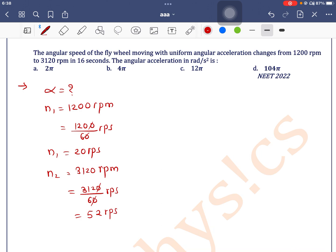Time is given as 16 seconds. We can write angular acceleration α equals ω₂ minus ω₁ divided by time. ω₂ minus ω₁ is written as 2πn₂ minus 2πn₁ divided by time. If you take 2π common, you get 2π times (n₂ - n₁) divided by time.